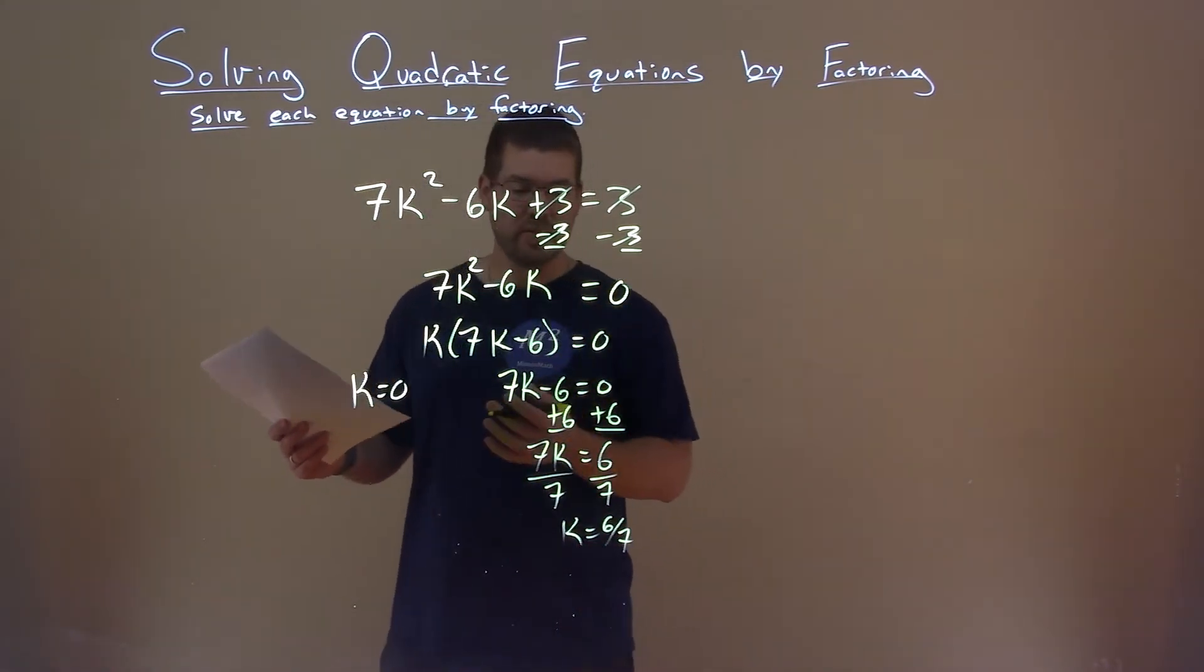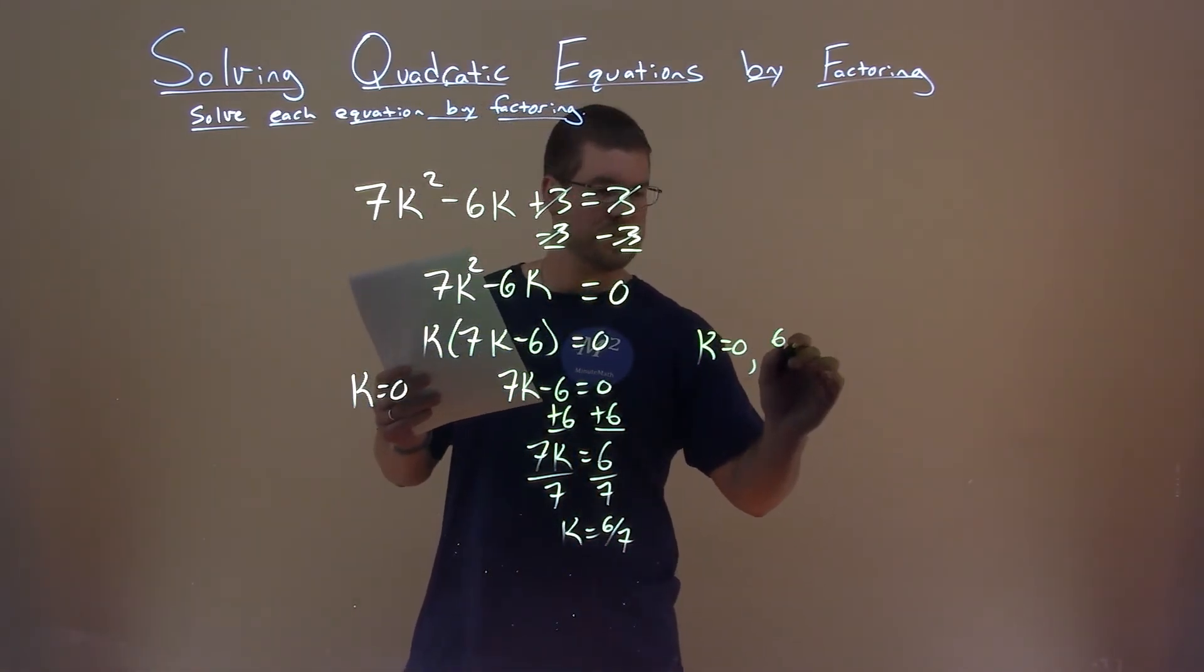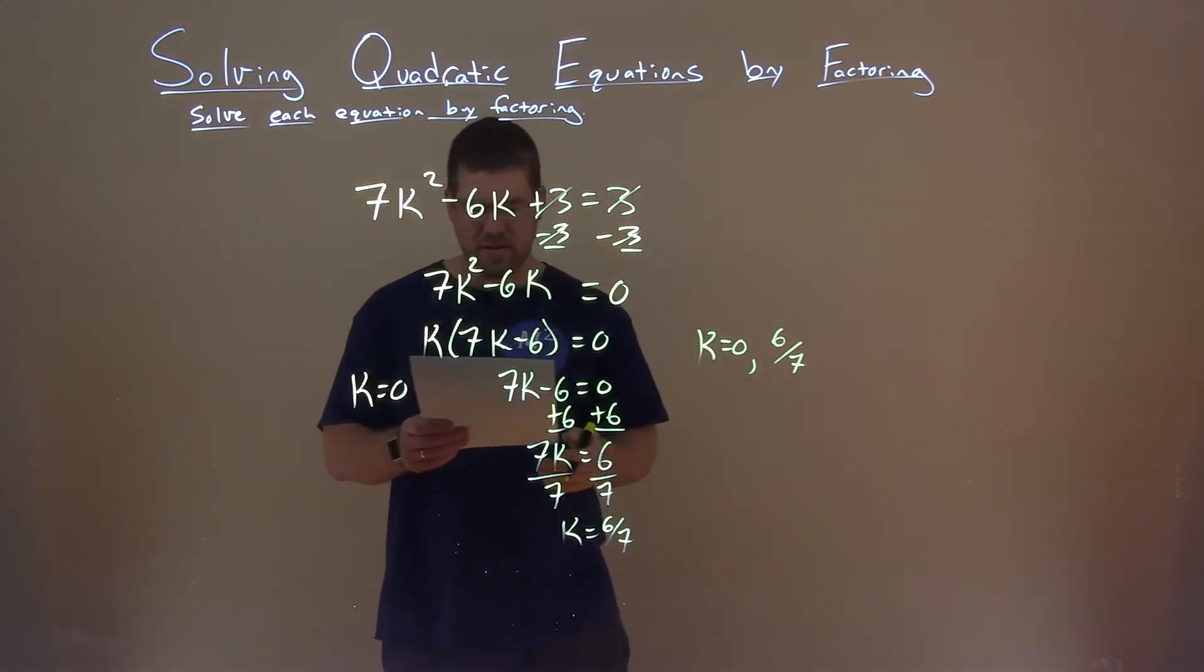And so, my two answers here are k equals 0 and 6 sevenths, and that is our final answer.